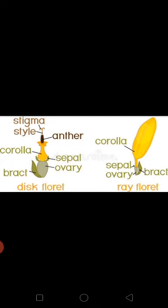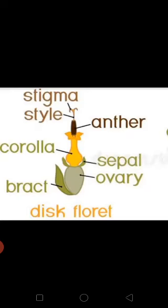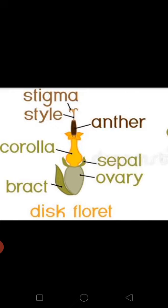In Surya Gandhi, the head inflorescence contains a collection of flowers. The disc florets found in the central region are bisexual flowers — they are both male and female. The disc florets have an ovary and corolla, and they are actinomorphic in symmetry.